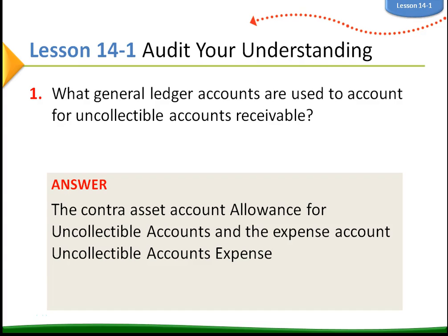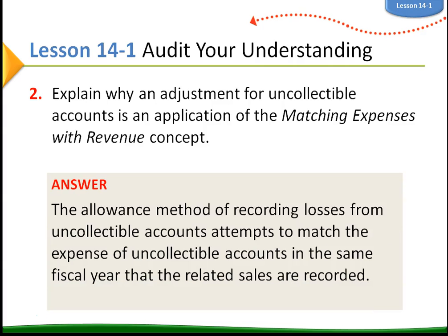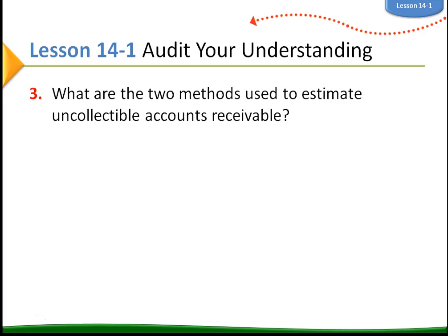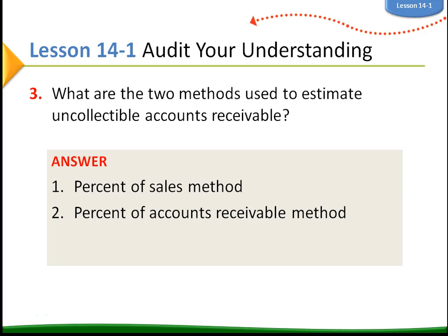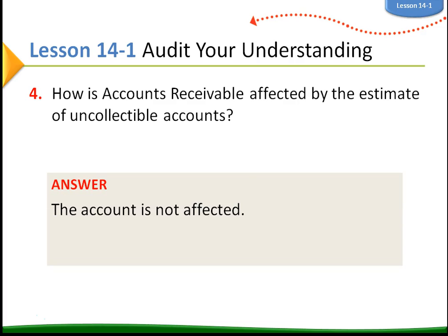Review questions: What general ledger accounts are used to account for uncollectible accounts receivable? A contra asset account called allowance for uncollectible accounts, and the expense account called uncollectible accounts expense. Why is the adjustment for uncollectible accounts an application of the matching expenses with revenue concept? Because the allowance method attempts to match the expense of uncollectible accounts in the same fiscal year that the related sales are recorded — that is the generally accepted accounting principle. The two methods used to estimate uncollectible accounts receivable are the percent of sales method and the percent of accounts receivable method. 3Green uses the percent of accounts receivable method. How is accounts receivable affected by the estimate? The accounts receivable account itself is not affected — a contra account, the allowance for uncollectible accounts, takes the estimate into account.